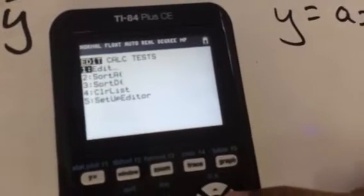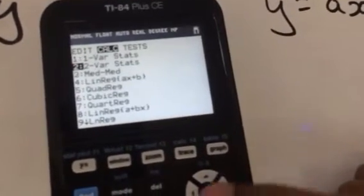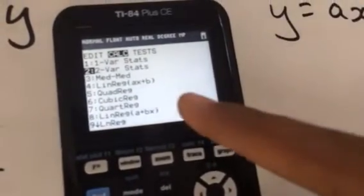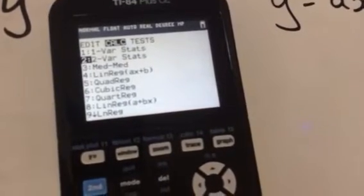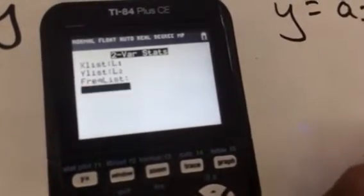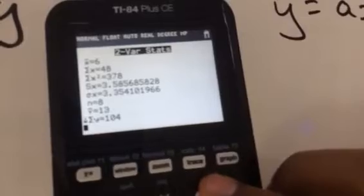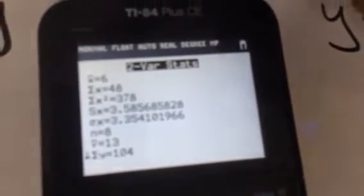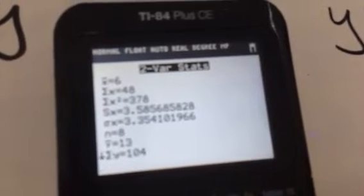So after this we go to stat, calculate. We go to two-var stats, enter, and we go straight to calculate. So from here we can see that the value at the top is 6. Bar x. That's 6.